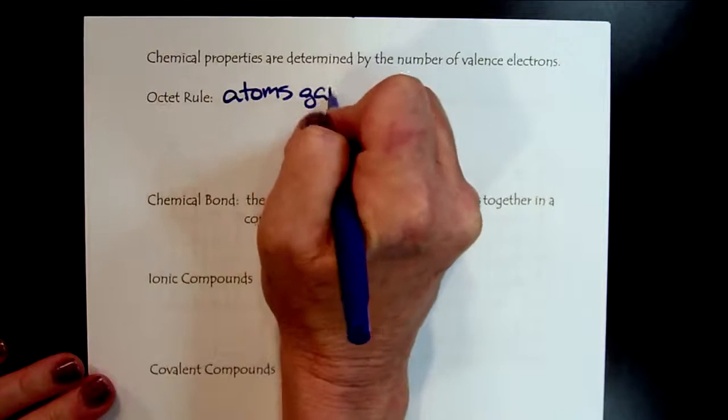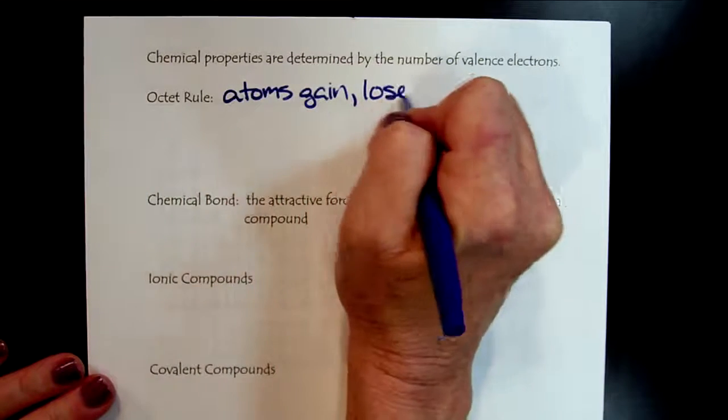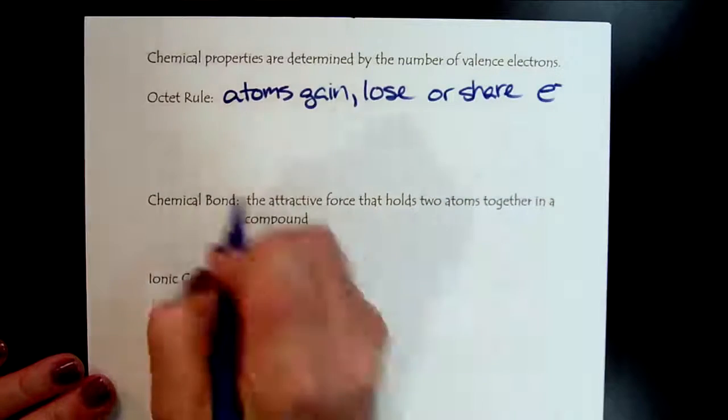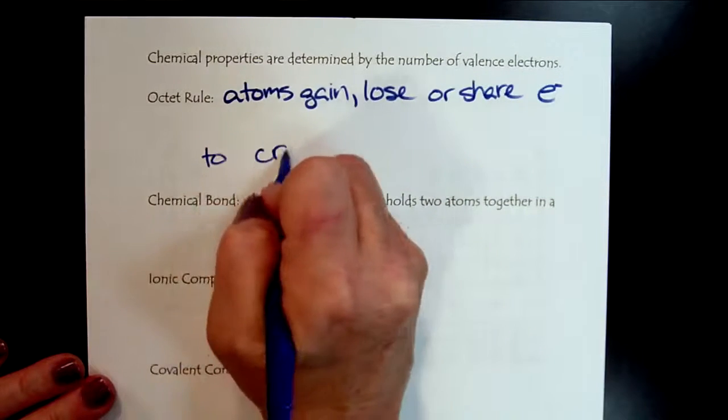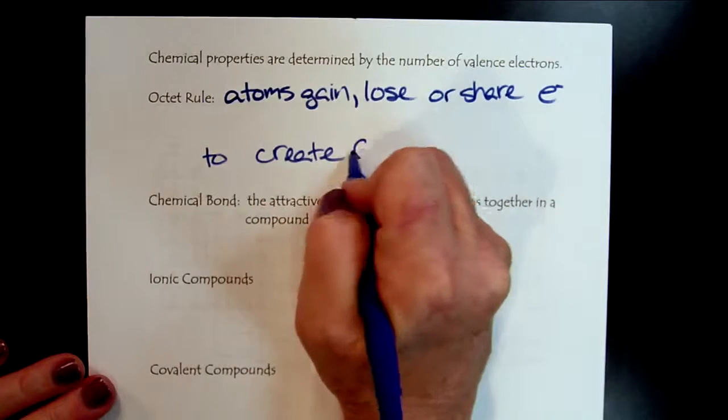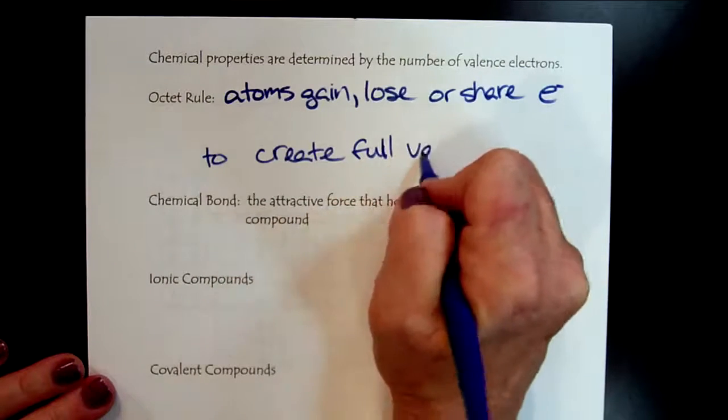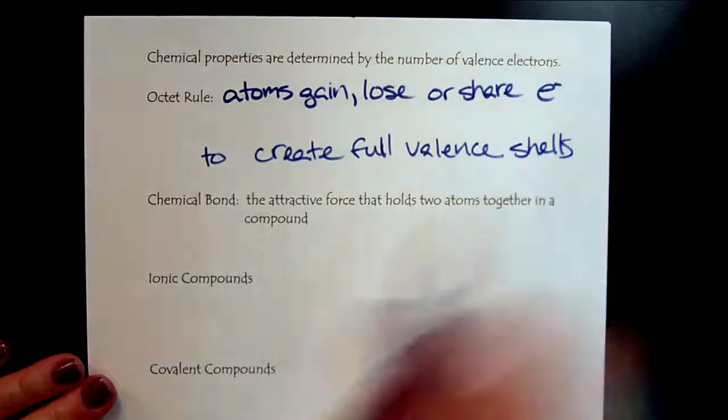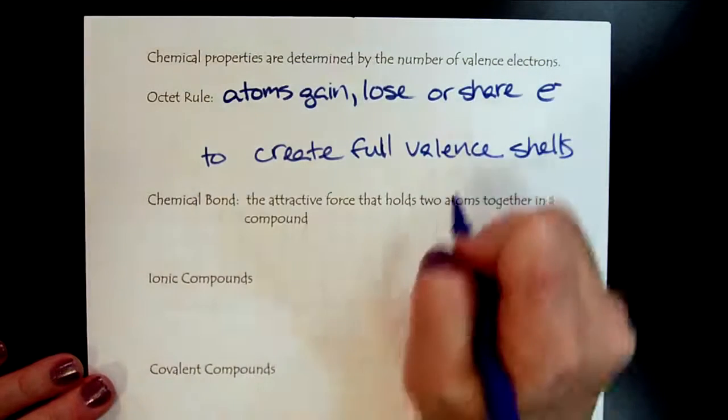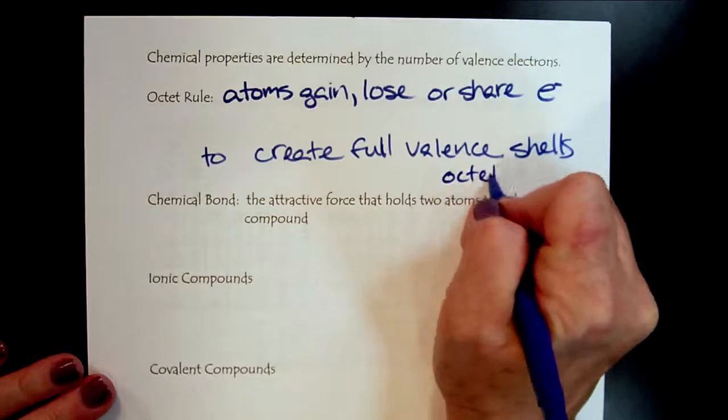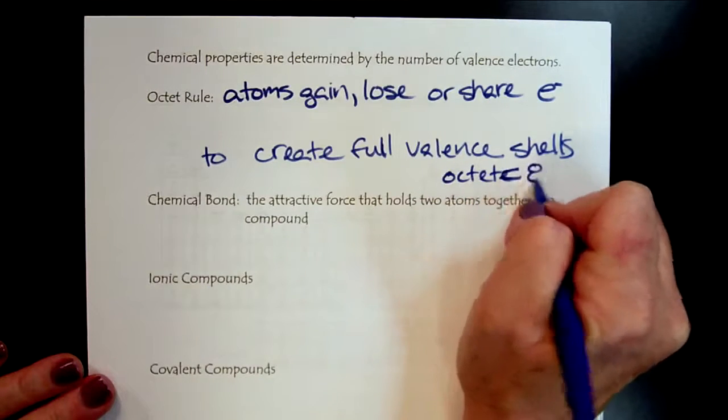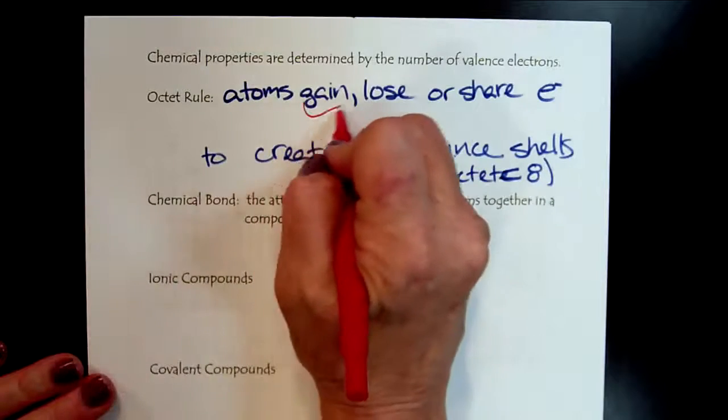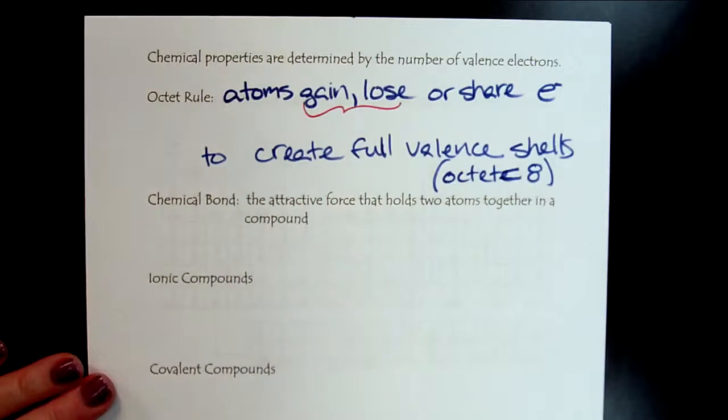Atoms gain, lose, or share electrons to create full valence shells. And that's where we get our octet. We're going to focus for this series on gaining and losing.